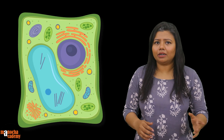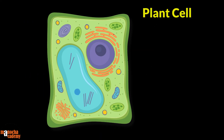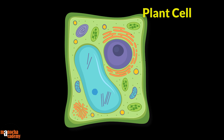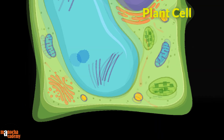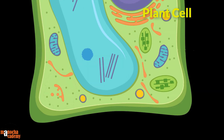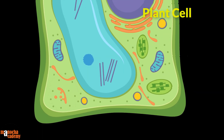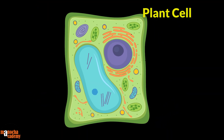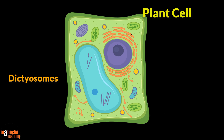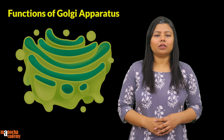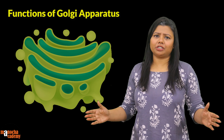We find something similar in case of plants. In most textbooks, the Golgi body in a plant cell is represented as a single organized structure. However, a more accurate representation shows that the Golgi bodies in plant cells do not form a Golgi apparatus. In fact, the Golgi bodies roam around freely and are known as dictyosomes.